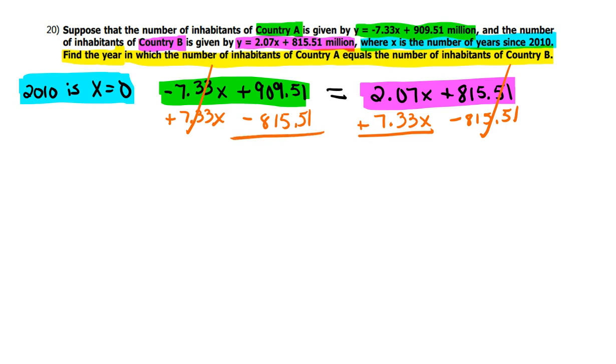So the other side is going to get that much smaller. And so now I'm going to take my 909.51 and subtract the 815.51. Well, isn't that nice? The .51s cancel out. So I'm left with 94. And then 2.07 on the right side, you're going to add that to the 7.33.